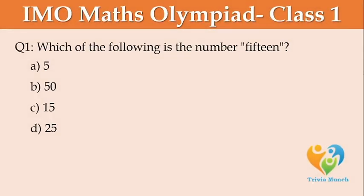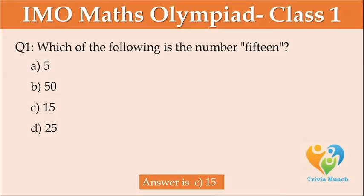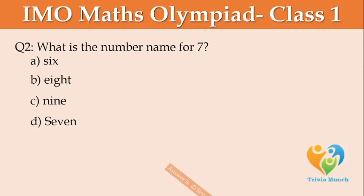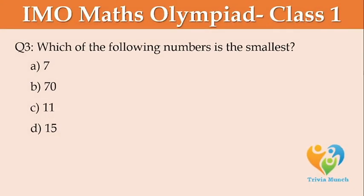Which of the following is the number 15? What is the number name for 7? Which of the following numbers is the smallest? Option A: 7, Option B: 70, Option C: 11, Option D: 15.